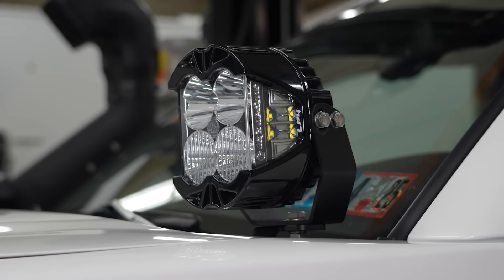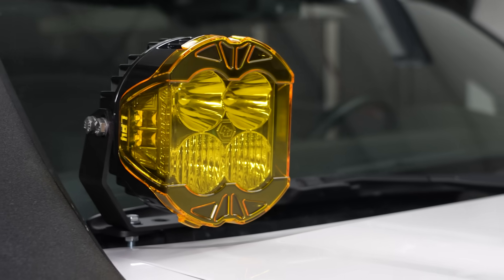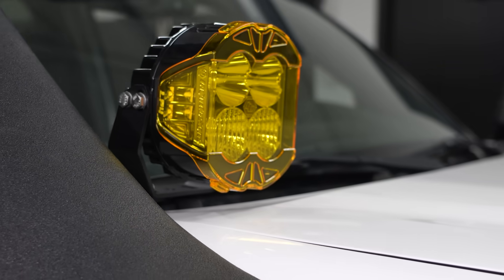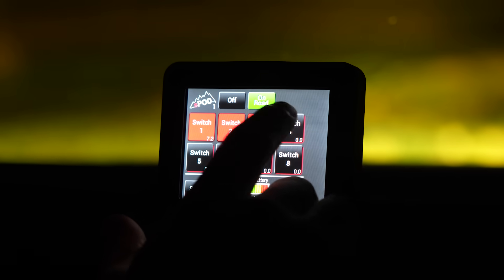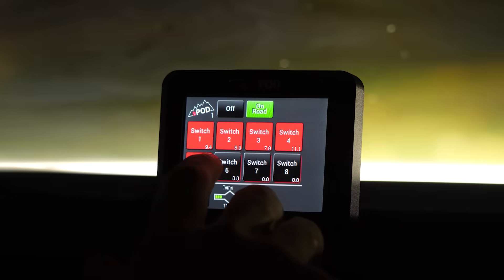That being said, no light can overcome pure intensity. If you've got your lights cranked to 11 in a wall of fog, it doesn't matter if they're clear, amber, or laser beams from Mars - you're still gonna get glare. But that's where dimming features or high and low beam options become crucial. Being able to dial things back for visibility, especially in nasty conditions, is a game changer.